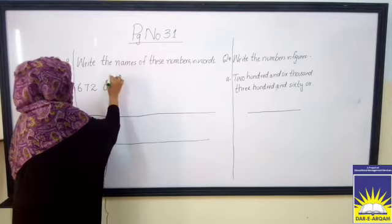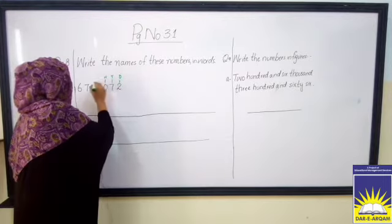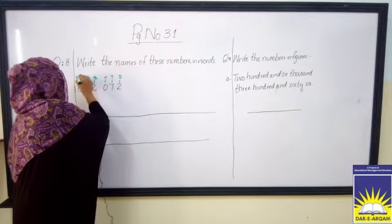You will always start from the right side. Once, tens, what do you want to do? Once, tens, hundred, thousand, ten thousand, hundred thousand.